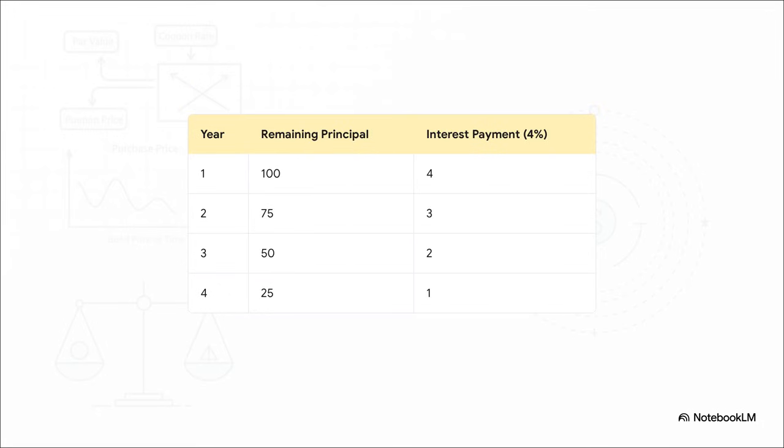Now for the interest payments. This is where it gets interesting. In year one, the full 100 of principal is still outstanding. So we get 4% of that, which is 4. But then we get that first 25 principal payment back, right? So now only 75 is left. In year two, the interest is 4% of 75, which is 3. And it just keeps shrinking every year as the principal gets paid down. This is absolutely key to understand. The interest payment is not some fixed amount.